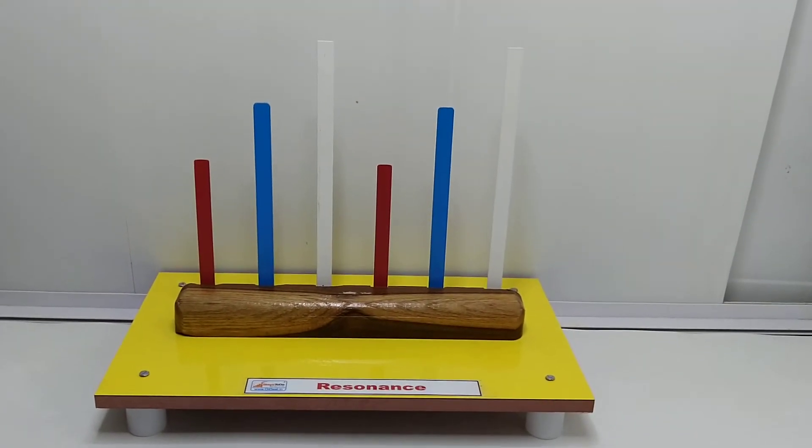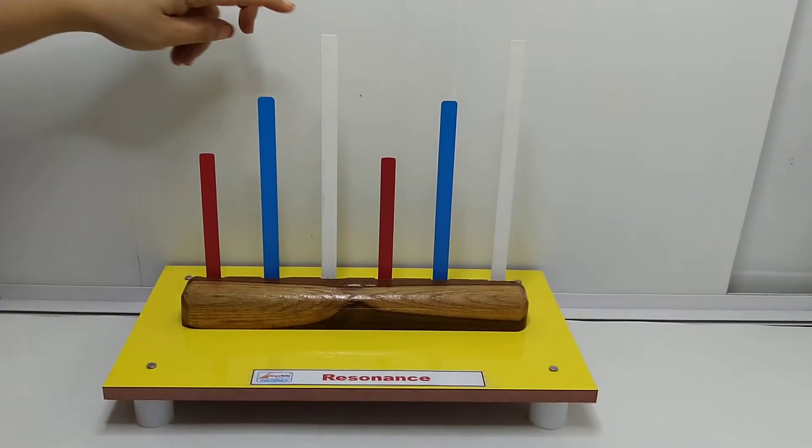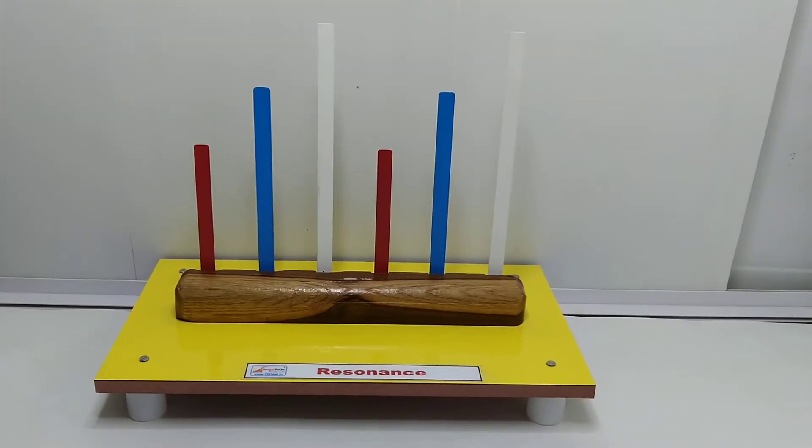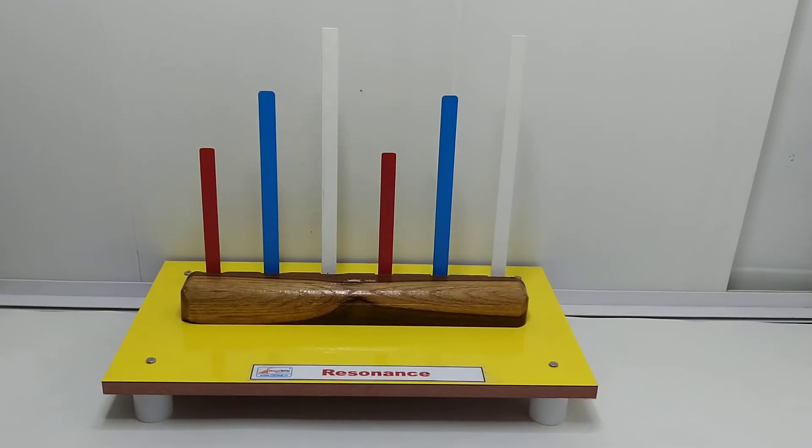In the same way, if I pluck the white, then white will vibrate with its maximum amplitude and the other two will vibrate with small amplitude. Now what is the learning from this?